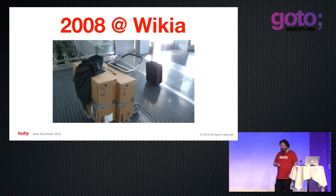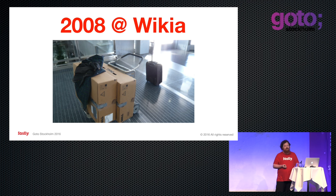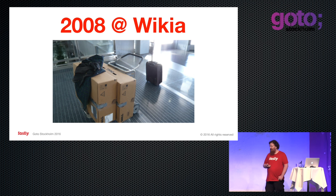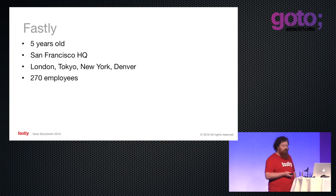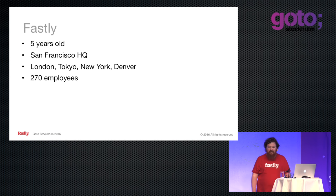The story really started in 2008 when I was at Wikia, where I decided, somewhat foolishly — in retrospect, not that foolish — that we needed to build our own CDN. I took two servers as Czech luggage and flew from San Francisco to London and built our first pop. That is a very cost-effective way of moving servers between countries — not recommended. And in 2011, started Fastly. Five years old, headquartered in San Francisco, 270 employees.